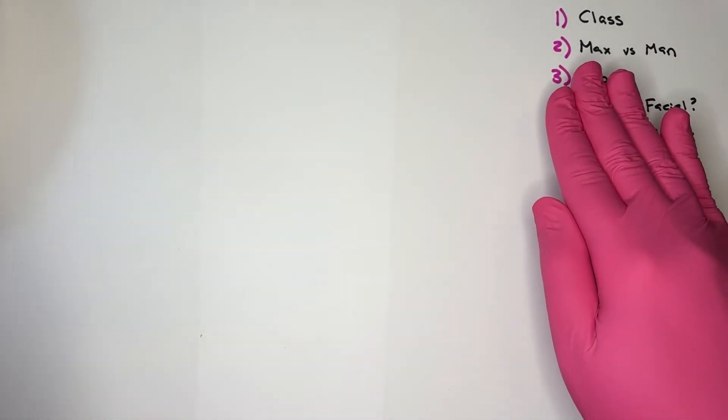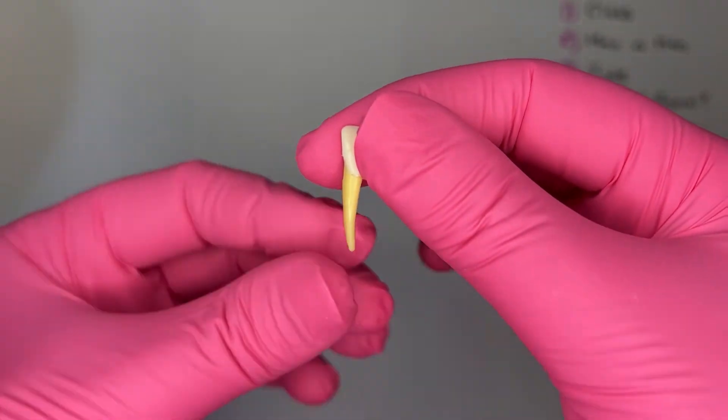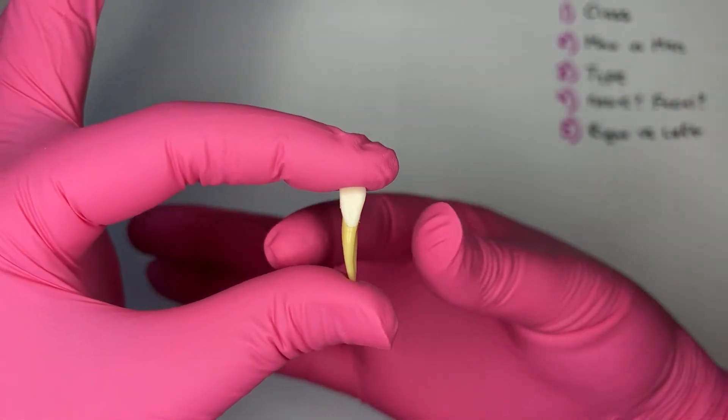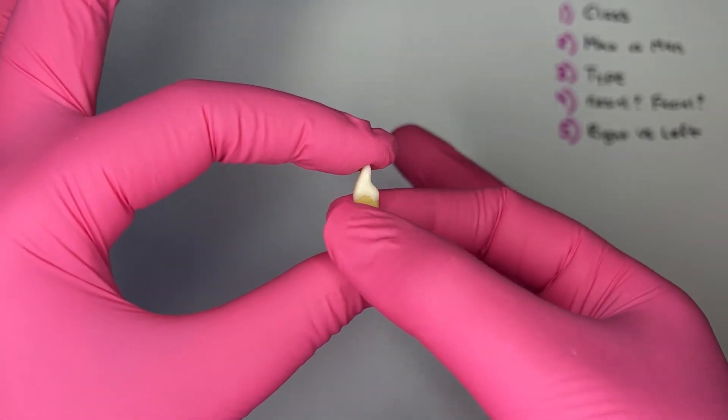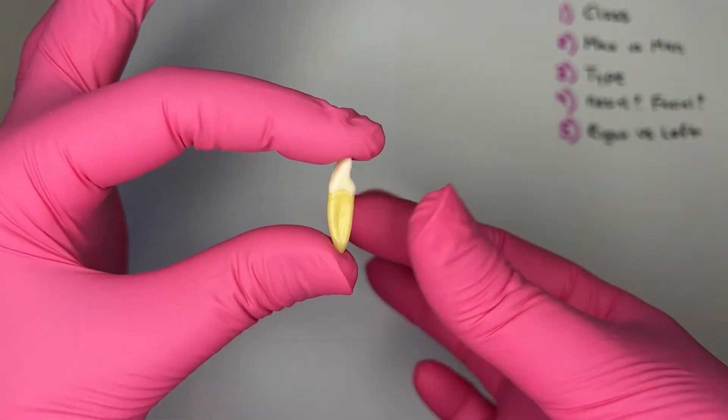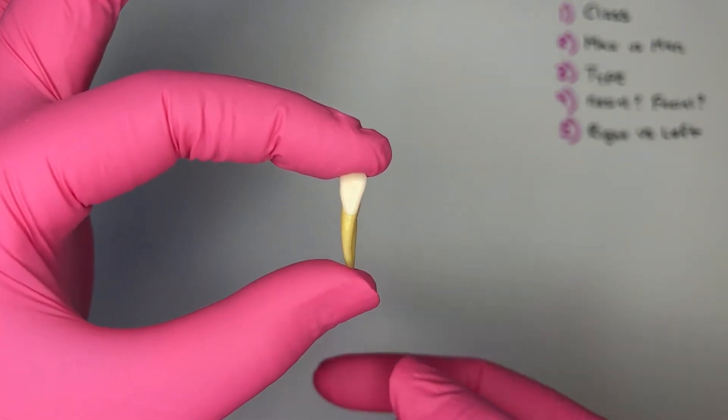Step two, is it a maxillary or mandibular incisor? With this tooth, I see it's very narrow mesial distally and wider facial lingually, giving this root a ribbon shape appearance. So this is a mandibular incisor.